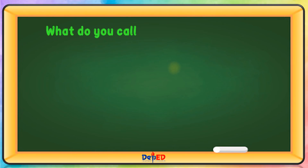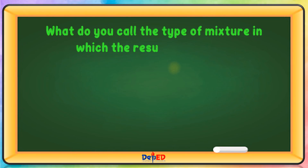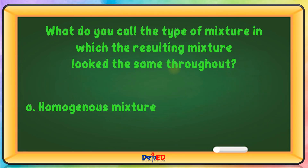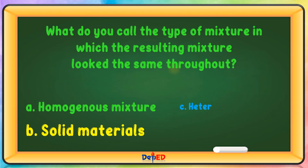What do you call the type of mixture in which the resulting mixture looks the same throughout? A. Homogeneous mixture. B. Solid materials. C. Heterogeneous mixture. Or D. Mixed materials. The correct answer is A, homogeneous mixture.